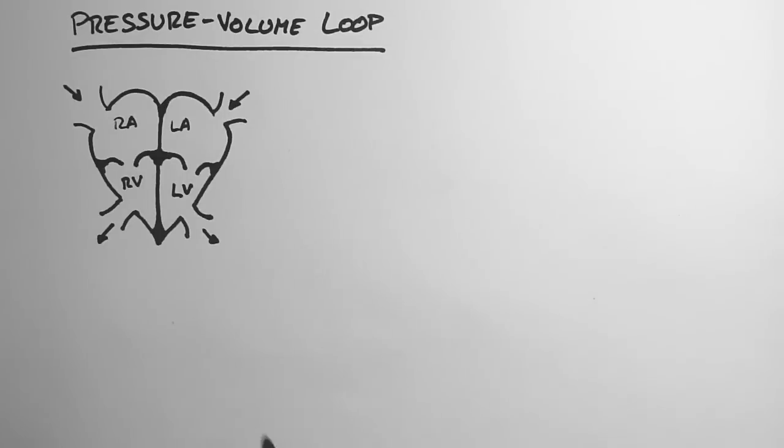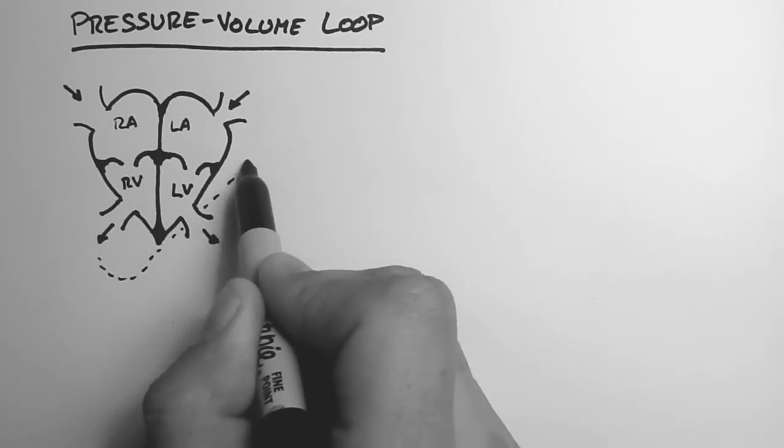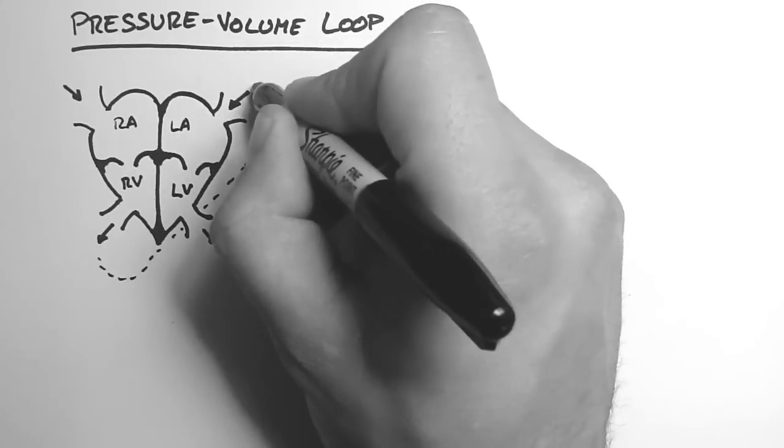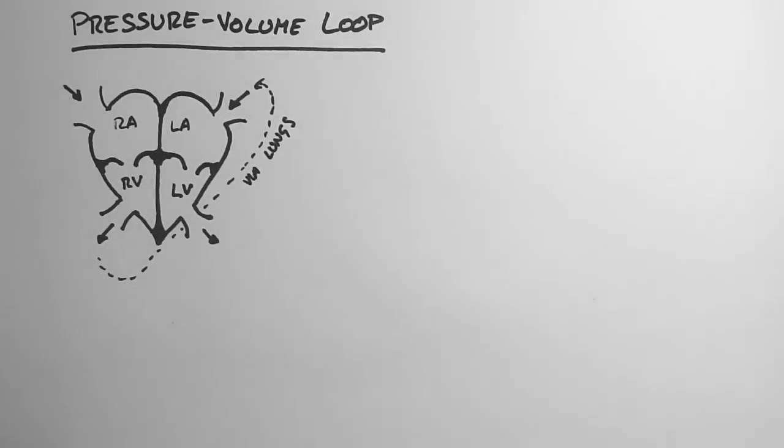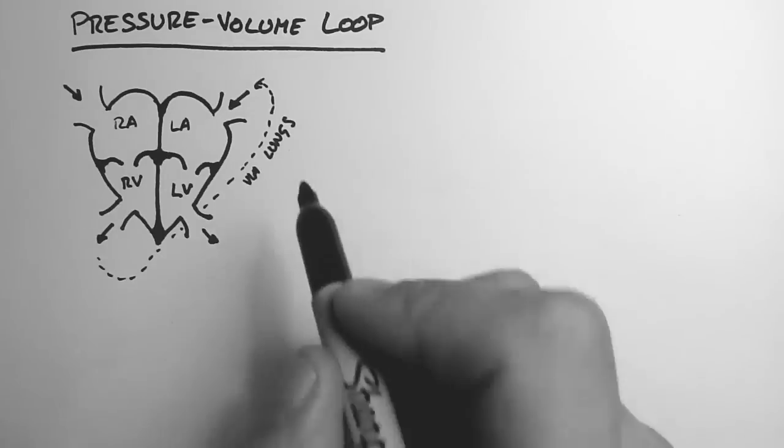And blood flows through these four chambers, kind of like this, going via the lungs from the right ventricle to the left atrium. Now we're going to concentrate on the left ventricle.